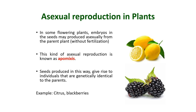Another type of asexual reproduction in plants is apomixis. Some plants can produce seeds without fertilization — this method of reproduction is known as apomixis. Seeds produced in this way give rise to individuals that are genetically identical to the parent, even though the seeds are dispersed in nature to grow into new individuals.